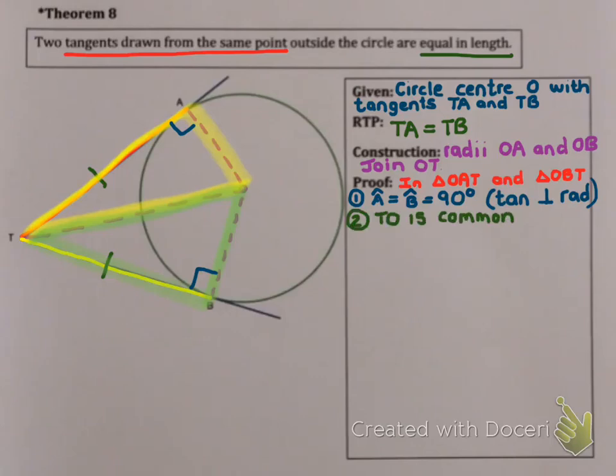Secondly, TO is common. TO forms part of both triangles. And thirdly, my radii are equal. So OA equals OB because they are radii.